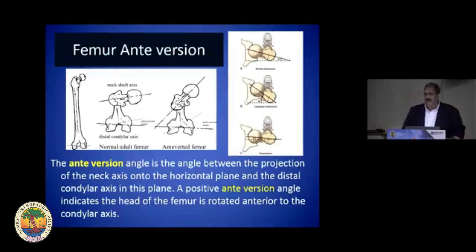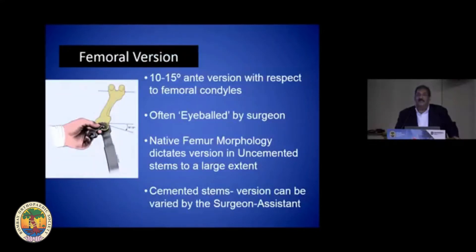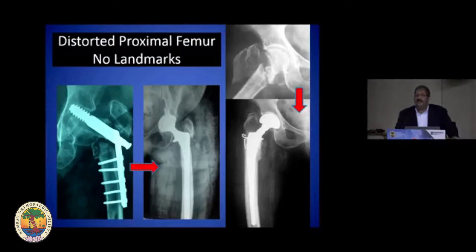Coming to the femur — femoral anteversion is the angle between the projection of the neck relative to the condyles. It's usually around 10 to 15 degrees; in infants it is more, and increased anteversion gives an in-toeing gait. The femoral version is usually an eyeball scenario for most surgeons. The native femur morphology restricts or dictates it, especially in uncemented systems, but in cemented systems we have some leeway and surgical technique is crucial.